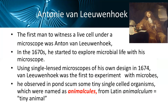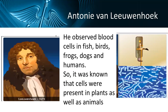The first man to witness a live cell under a microscope was Anton Leeuwenhoek. In the 1670s he started to explore microbial life using single-lens microscopes of his own design. In 1674, Leeuwenhoek was the first to experiment with microbes — he observed tiny single-celled organisms in pond water, which he named animalcules, from the Latin word animalculum meaning tiny animals. He also observed blood cells in fish, birds, frogs, dogs, and humans, establishing that cells were present in both plants and animals.